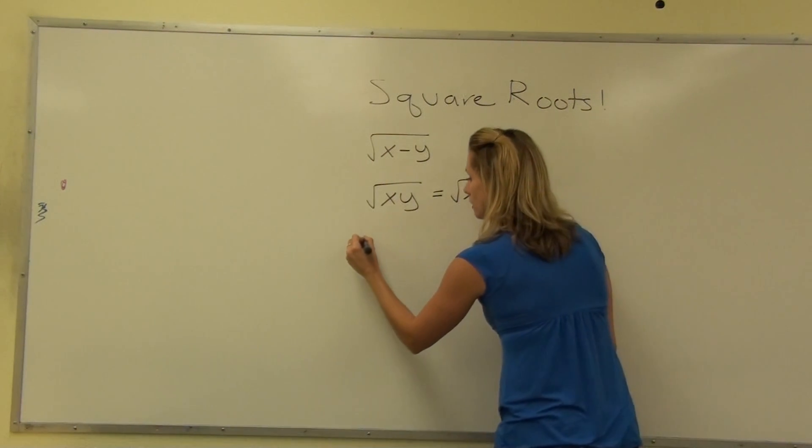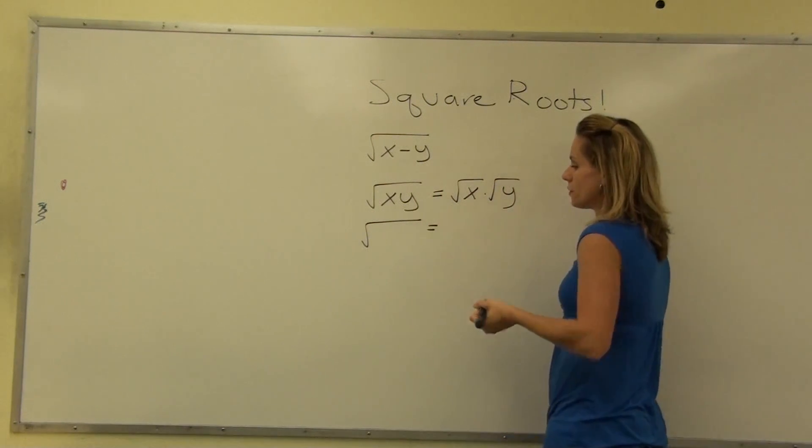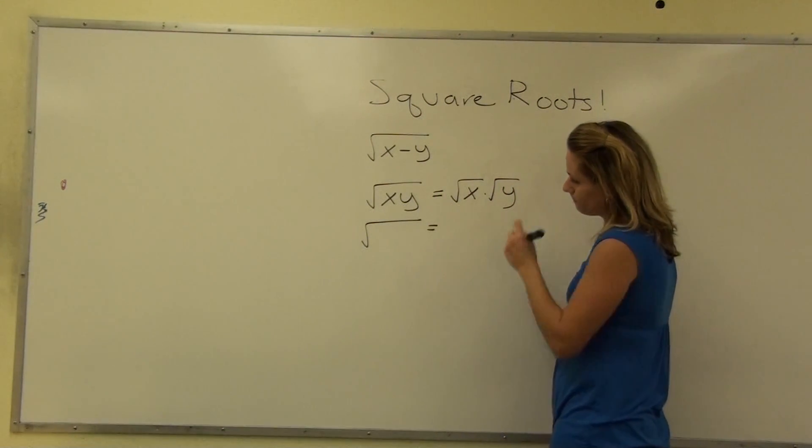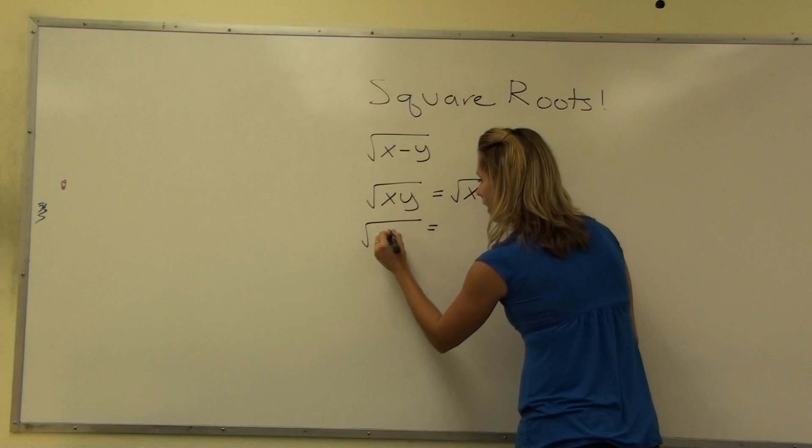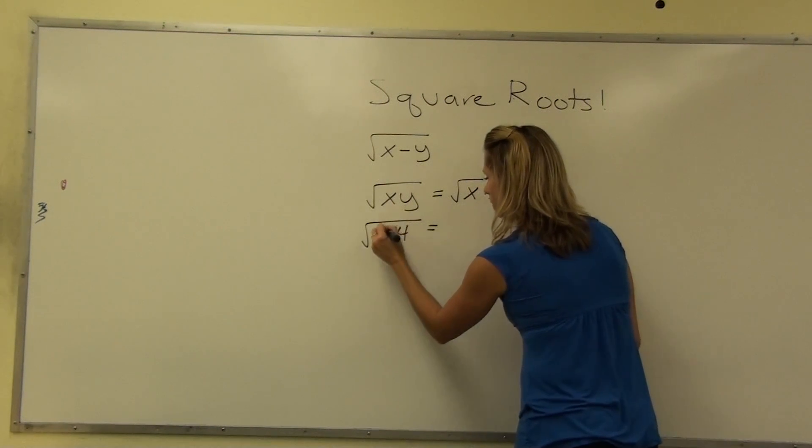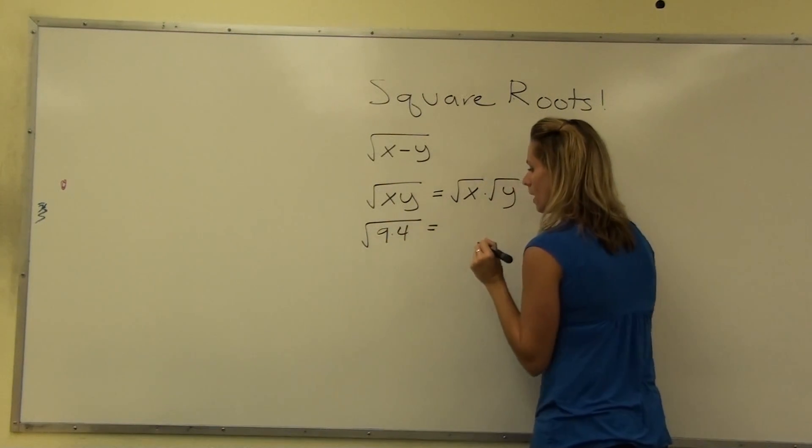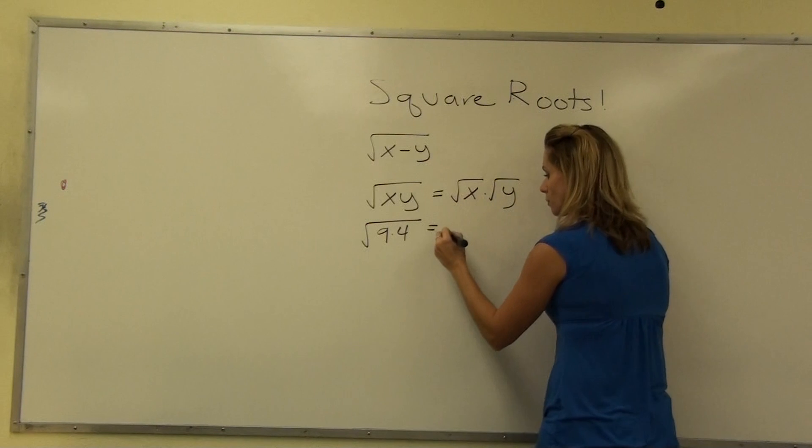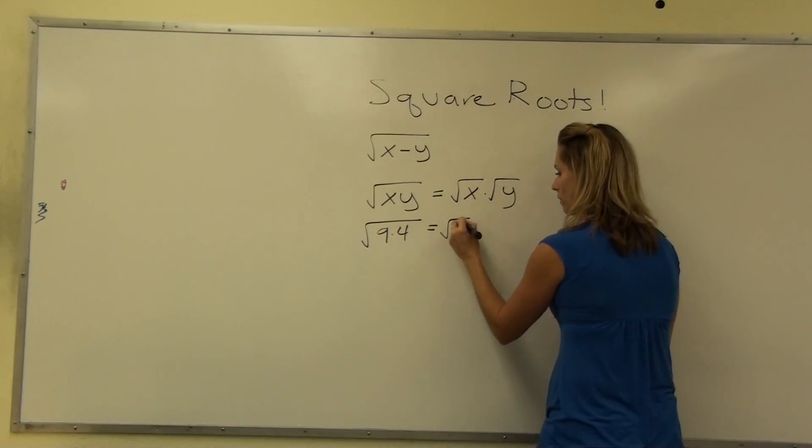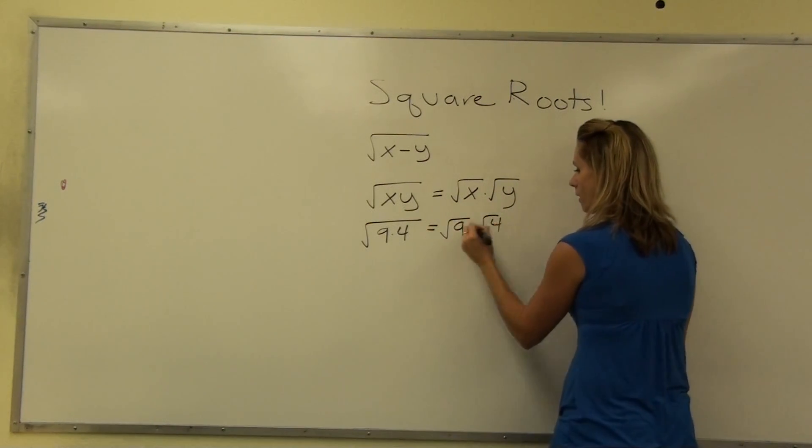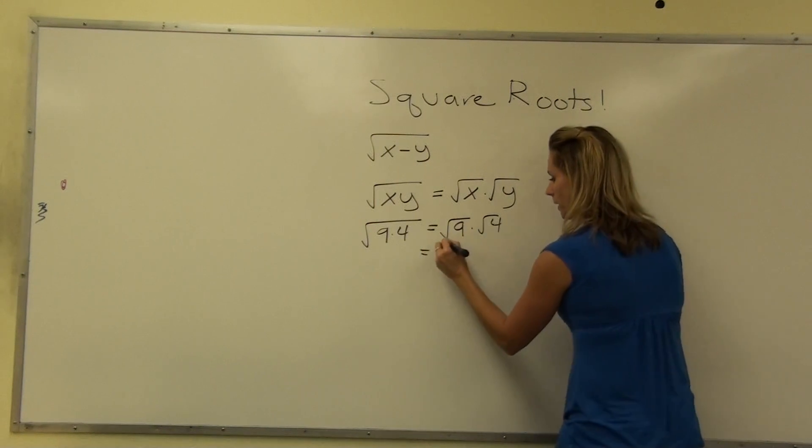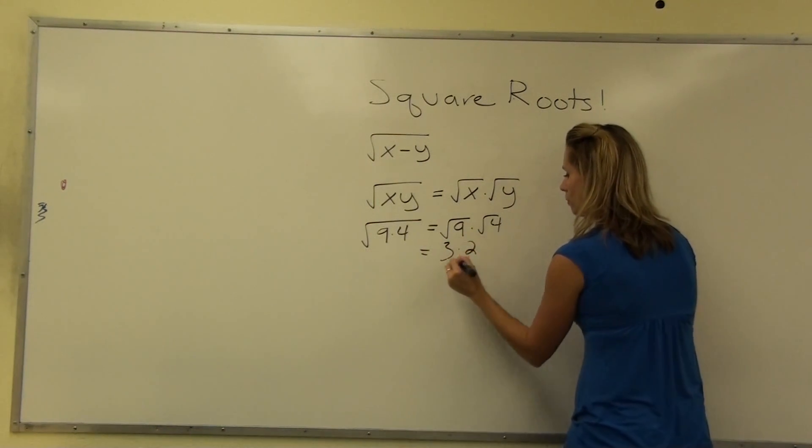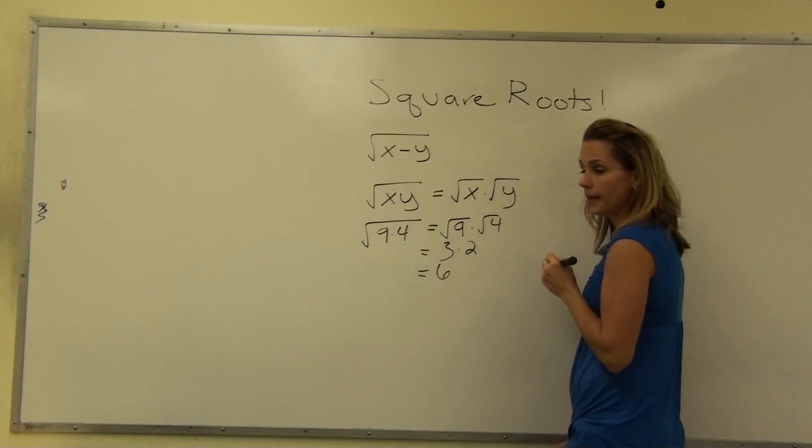So let's take a look at an example of that. Let's say we have the square root of 9 times 4. Now, we know, if this is true, it should be equal to the square root of 9 times the square root of 4. Well, that is 3, that is 2, 3 times 2 is 6.